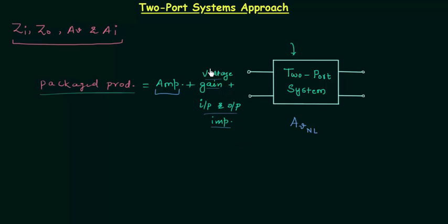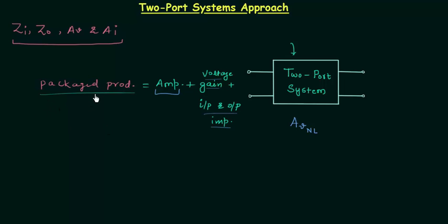Using these parameters, we can easily obtain the four parameters in loaded condition. We need to obtain input and output impedances and current and voltage gains in loaded condition when load resistance is connected. We will use the no-load voltage gain and input and output impedances which are already given with the packaged product — there is no need to know the internal construction of the amplifier circuit.